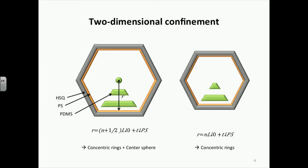These figures show the commensurability conditions. When the center-to-wall distance R is equal to an integer-plus-half multiple of the equilibrium periodicity L0 plus the brush thickness T_PS, we achieve concentric rings with a center sphere. When R equals an integer multiple of L0 plus T_PS, we achieve concentric rings with no center sphere.